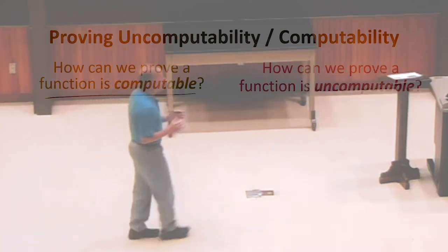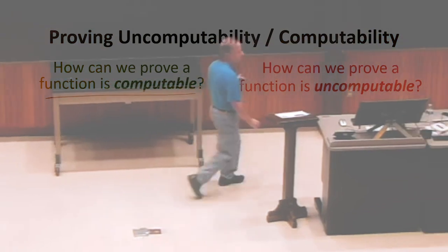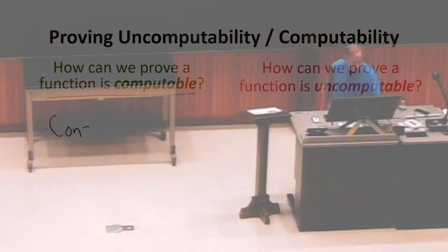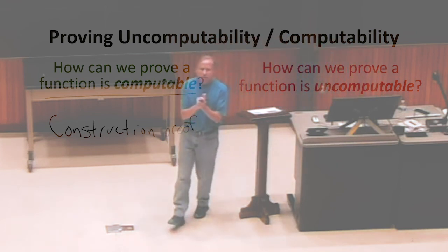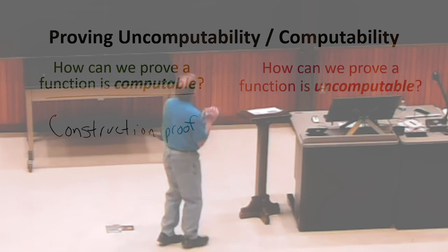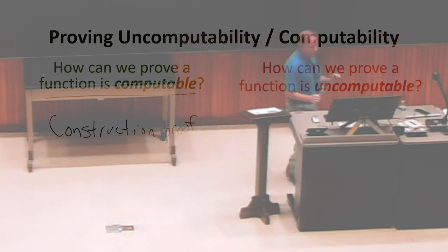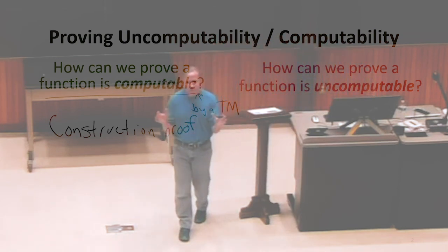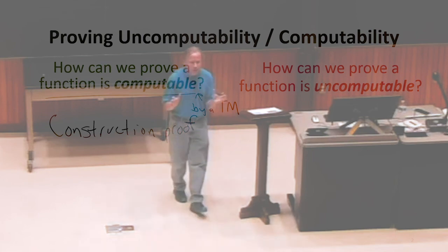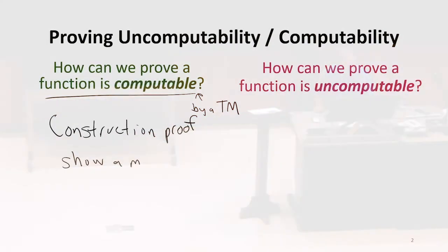The most natural way to prove something is computable is a construction. If you can show how to make a machine that computes it, there's an implied in this question, computable by a Turing machine. If we asked if this is computable by a circuit or by a finite state machine, that would be a different thing you have to construct.